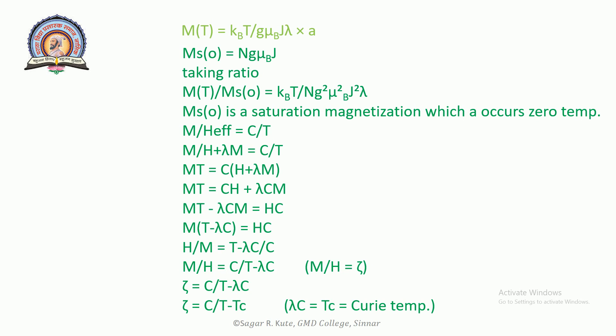M over H_effective equals C over T. H_effective equals H plus lambda M. Putting this value: M over (H plus lambda M) equals C over T. This gives M T equals C times (H plus lambda M). M T equals C H plus lambda C M. Moving lambda C M to the left side: M T minus lambda C M equals H C. Taking M common: M times (T minus lambda C) equals H C.